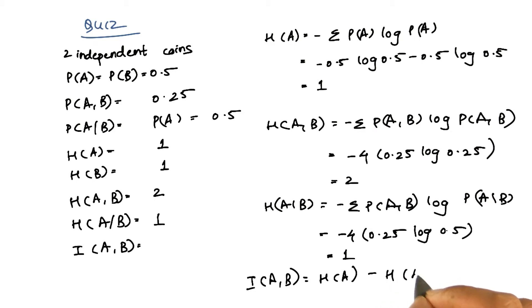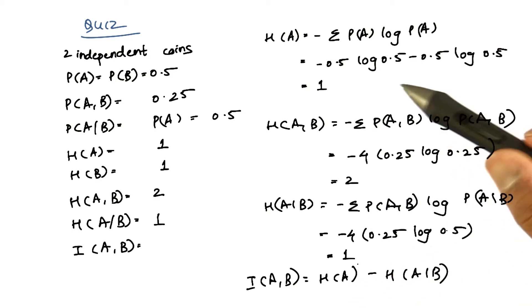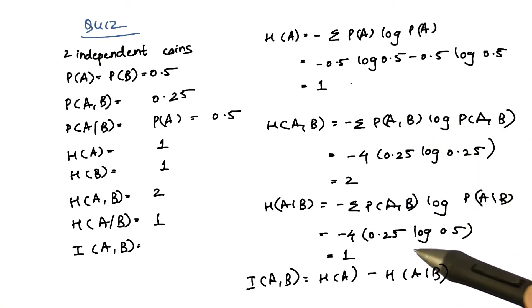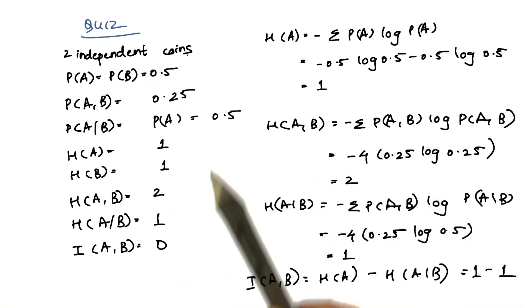Mutual information between A and B is given by this formula. If we substitute the values we've calculated—entropy of A and entropy of A given B—we get 1 minus 1, which is 0. Since the two coins are independent, there is no mutual information between them.